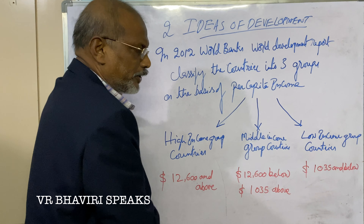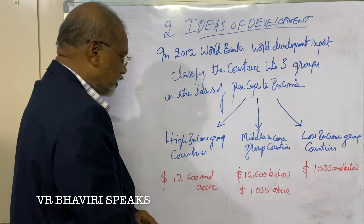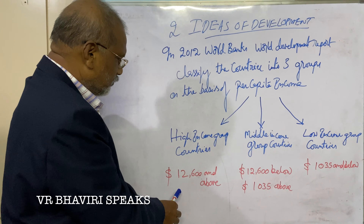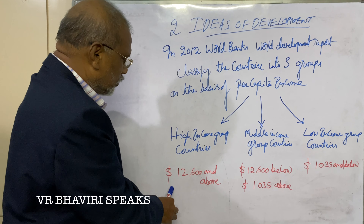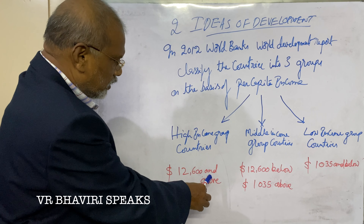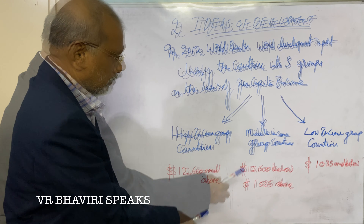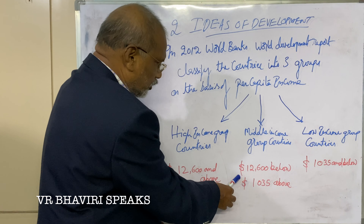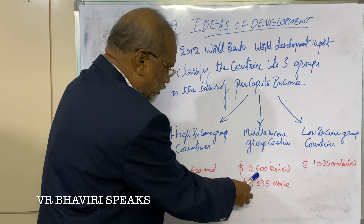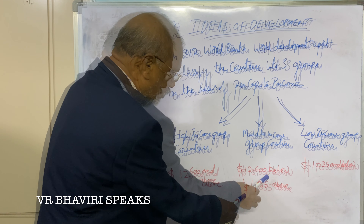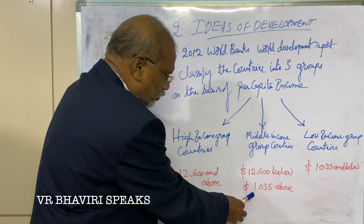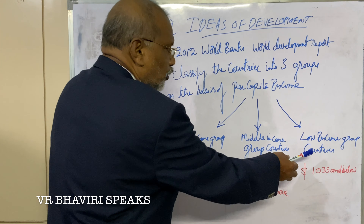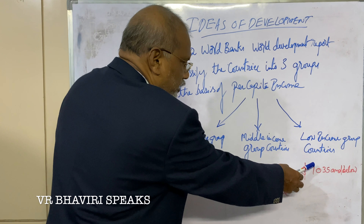In 2012, the World Bank World Development Report classified the countries into three categories on the basis of per capita income: high-income group countries, middle-income group countries, and low-income group countries.